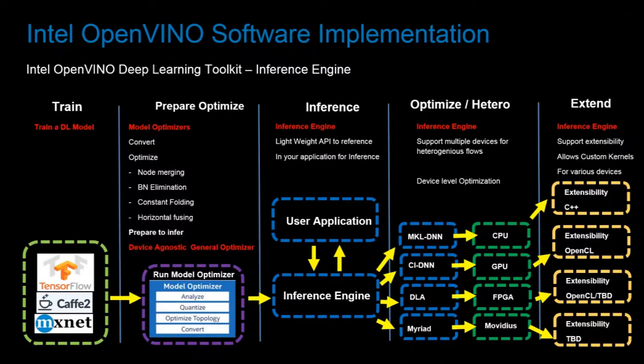Here's a high-level view of what bringing a trained model from an AI framework into the OpenVINO inference engine looks like. We would generally have a training environment on the left that produces an output model file for the respective AI framework. The model optimizer then converts models from the various frameworks — be it Caffe, TensorFlow, or MXNet — into a unified model that Intel refers to as an intermediate representation, abbreviated IR.